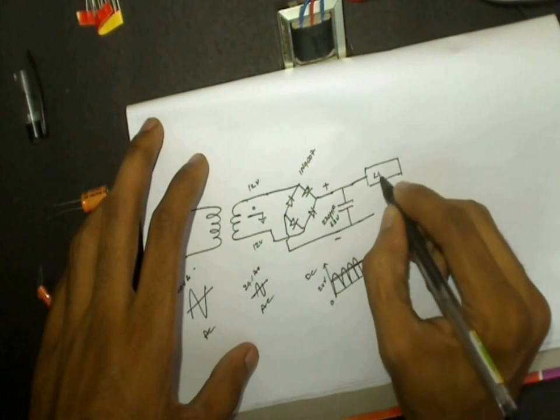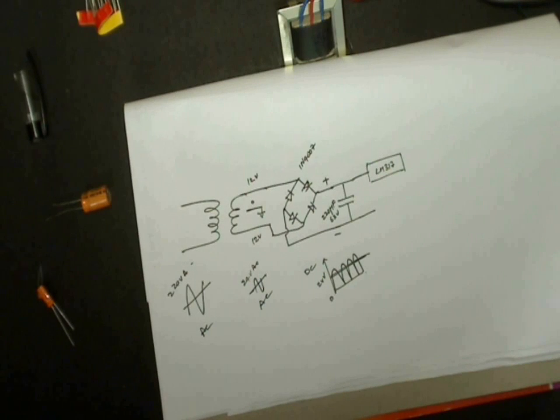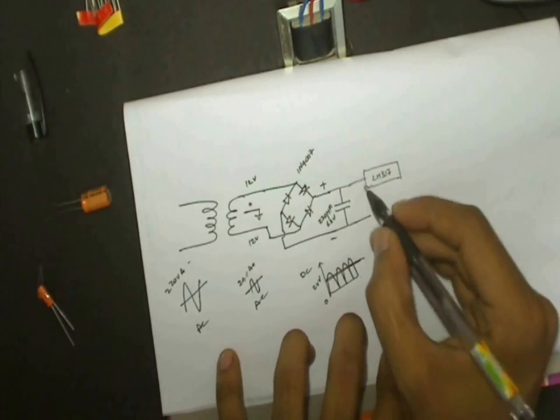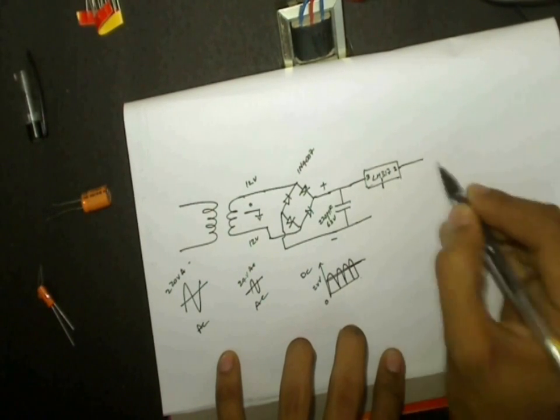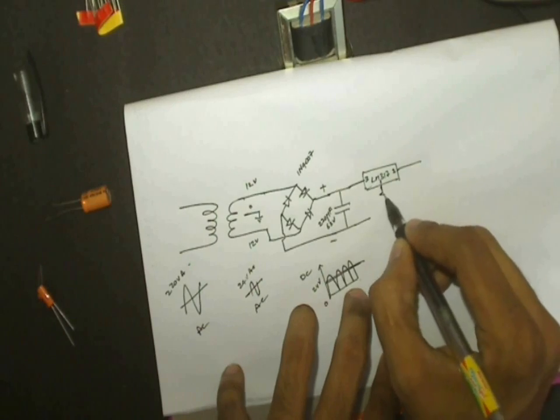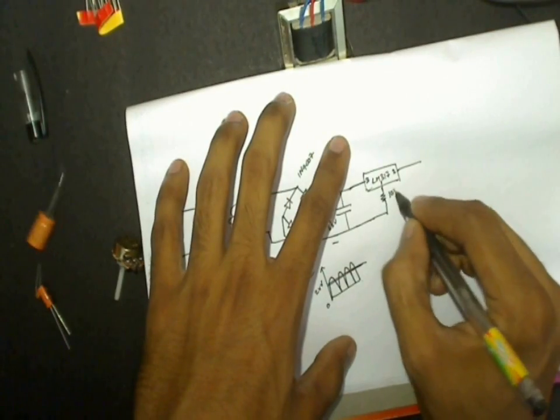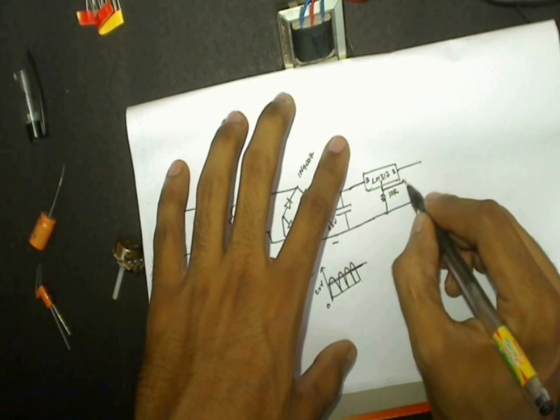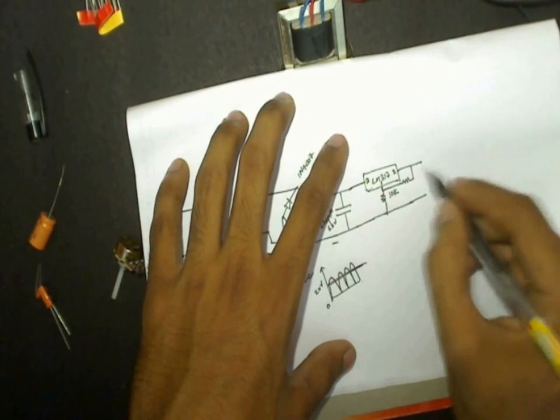To regulate the voltage, I will be using LM317 voltage regulator. And along with that, I will be using a 10 kilo ohm potentiometer at the adjustable pin of this LM317. By varying this 10 kilo ohm pot, I will be able to change the output voltage. Connect a feedback resistor from the output pin to the adjustable pin. I will show you the use of it later.